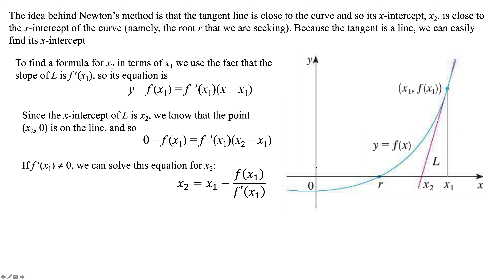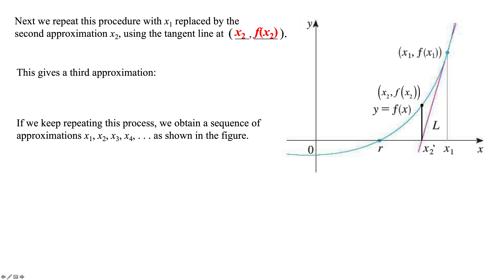We repeat this process: take x sub 2, go up to hit the point on the curve, then find another tangent line at that point. That gives us x sub 3 equals x sub 2 minus f(x sub 2) over f'(x sub 2) — basically the same equation as before.